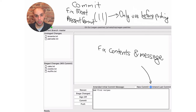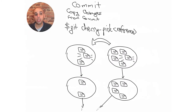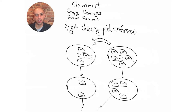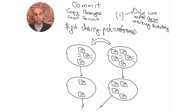Besides creating a commit from the changes in the working directory, Alice may also create a commit by copying the changes from another commit — this is called cherry picking. Note that it may be dangerous because it may change the contents of the working directory. So it's best to only run this command if the working directory is clean — no files that were added or removed. If there are some changes in the working directory and she wants to cherry-pick, it's best to first create a commit and then run cherry-pick.